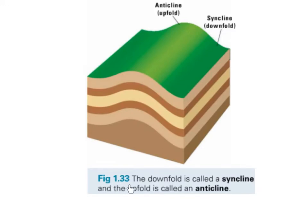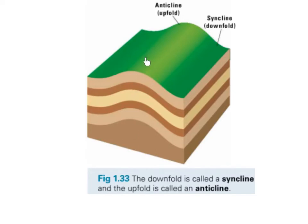Figure 1.33 shows that the downfold in a fold mountain is called the syncline. The part pushed downwards is known as the syncline. The upfold is called the anticline — the part that is pushed upwards. So the syncline is the downfold and the anticline is the upfold.